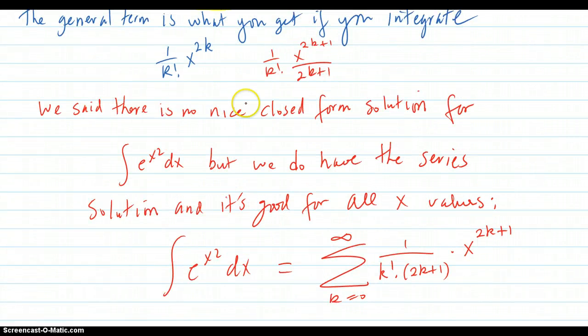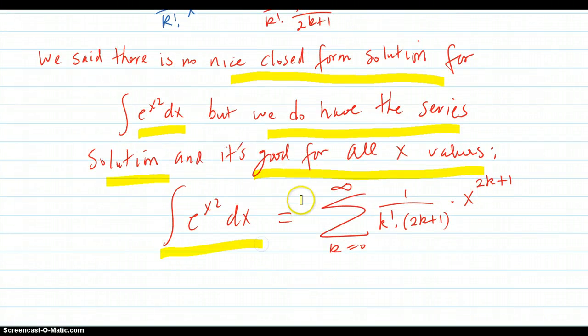So we said there was no nice closed form solution for it. But we do have the series solution. And it's good for all x values. So here it is. You can evaluate this anti-derivative at any x value you want by just sticking in this series. And that will do it.